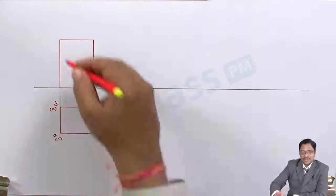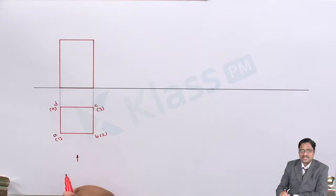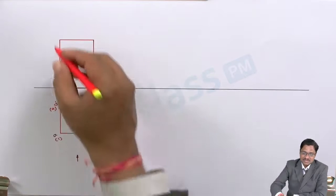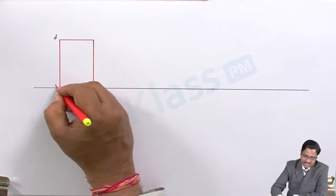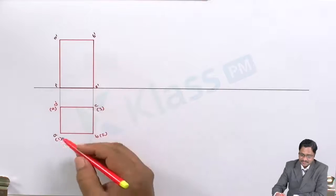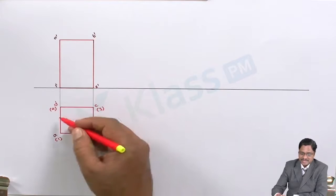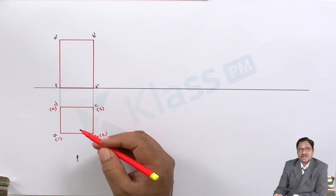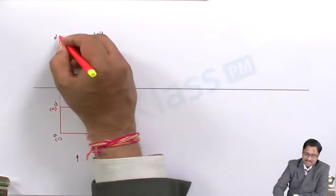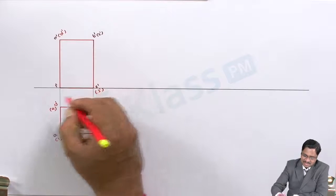To label the points on the front view, view the object from the front. Edge A1 and B2 are nearer to the observer, so they are directly visible — label them as A dash, 1 dash, B dash, and 2 dash. C, D, 3, and 4 are exactly behind B and C respectively, so they are not visible and are mentioned in brackets as C dash, D dash, 3 dash, and 4 dash. The primary view is now completed.